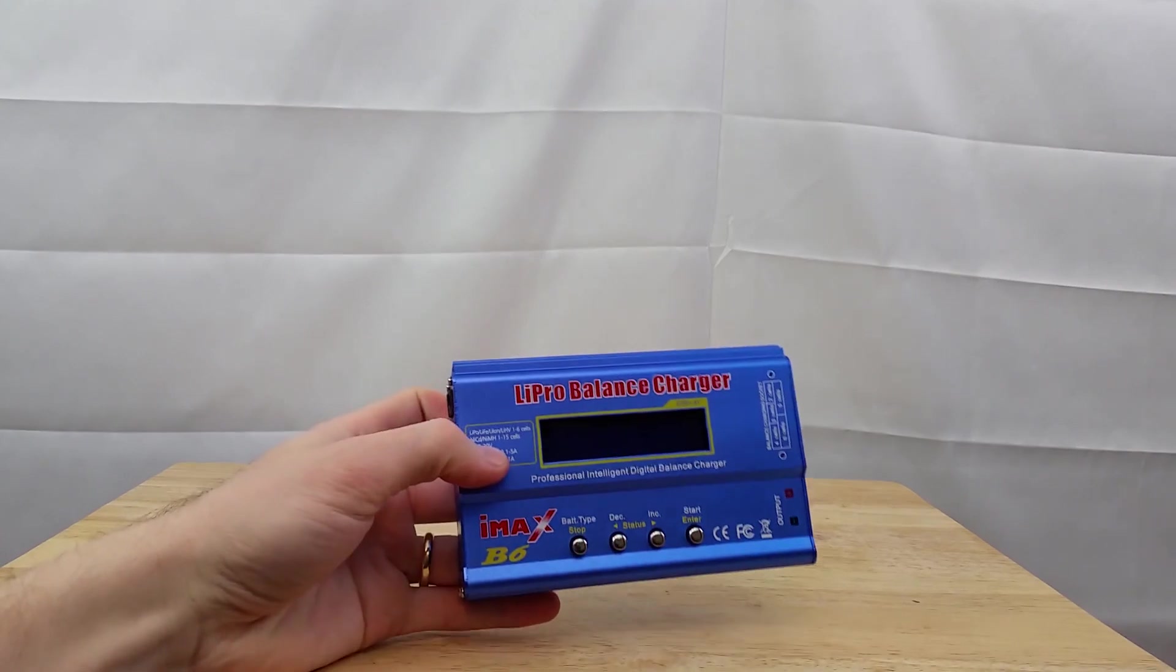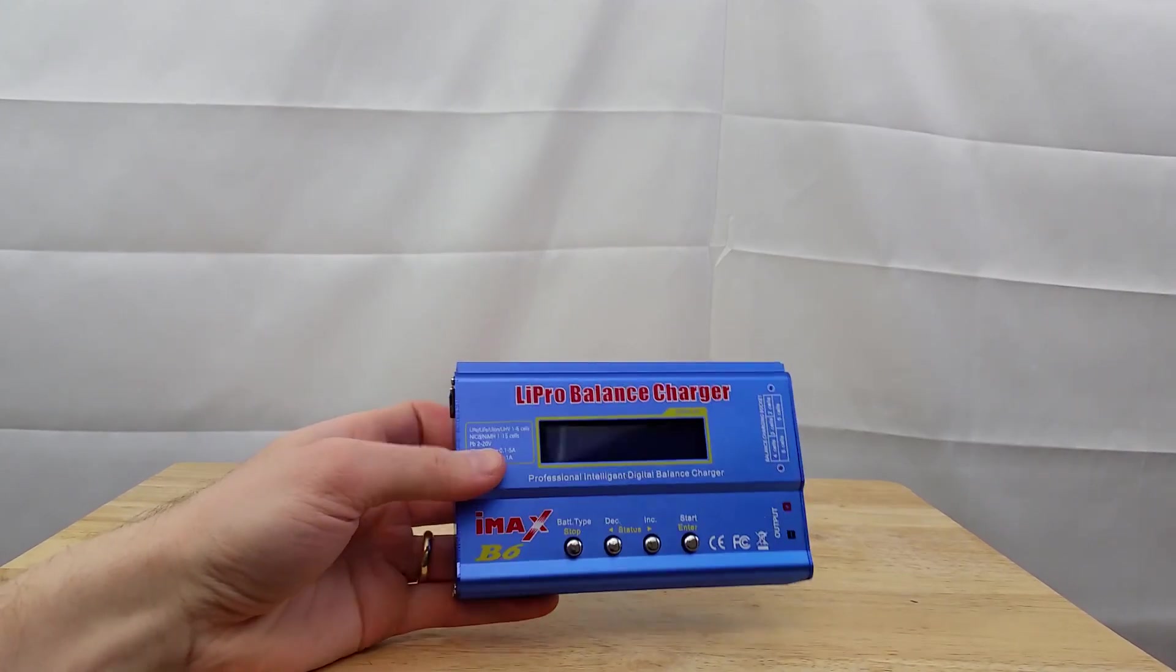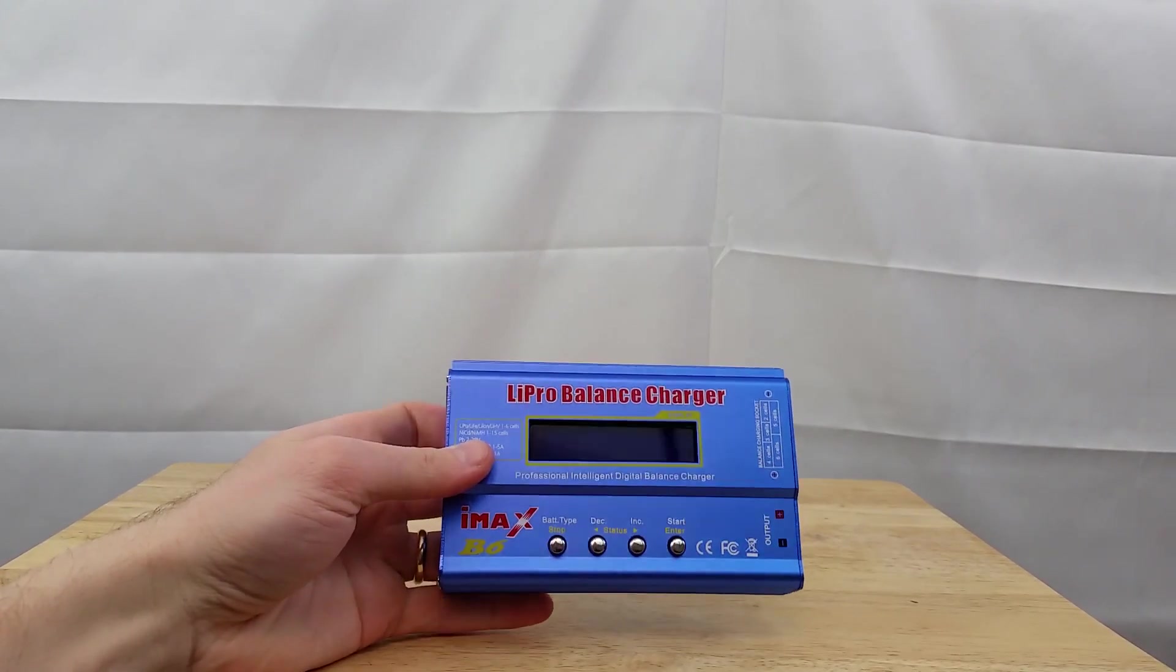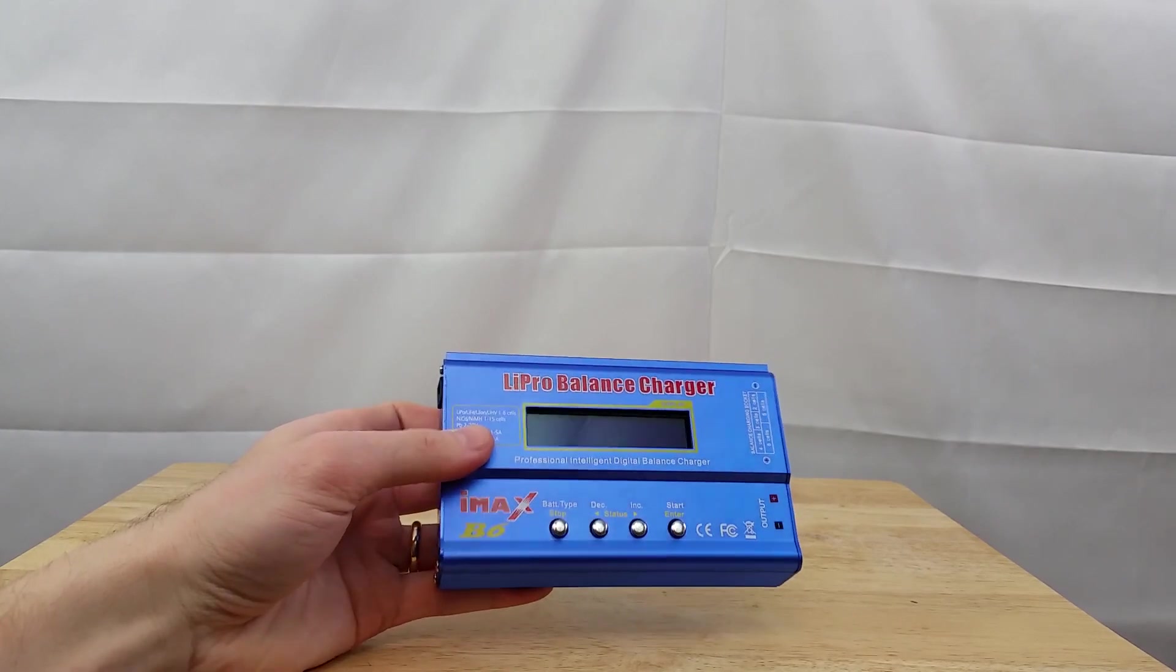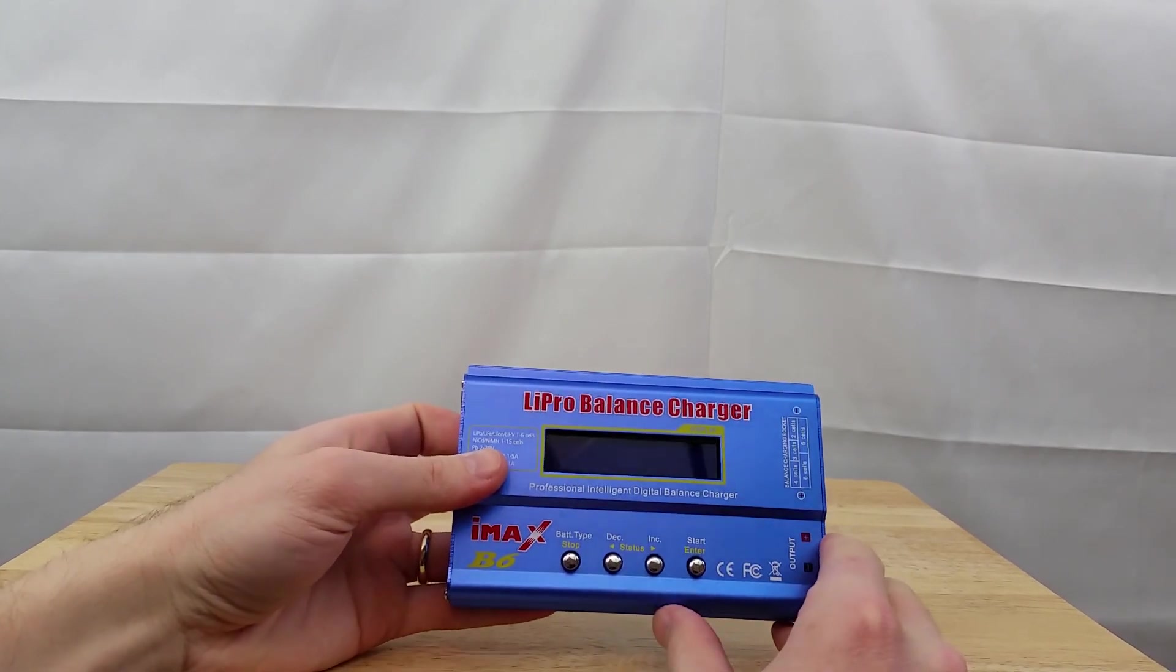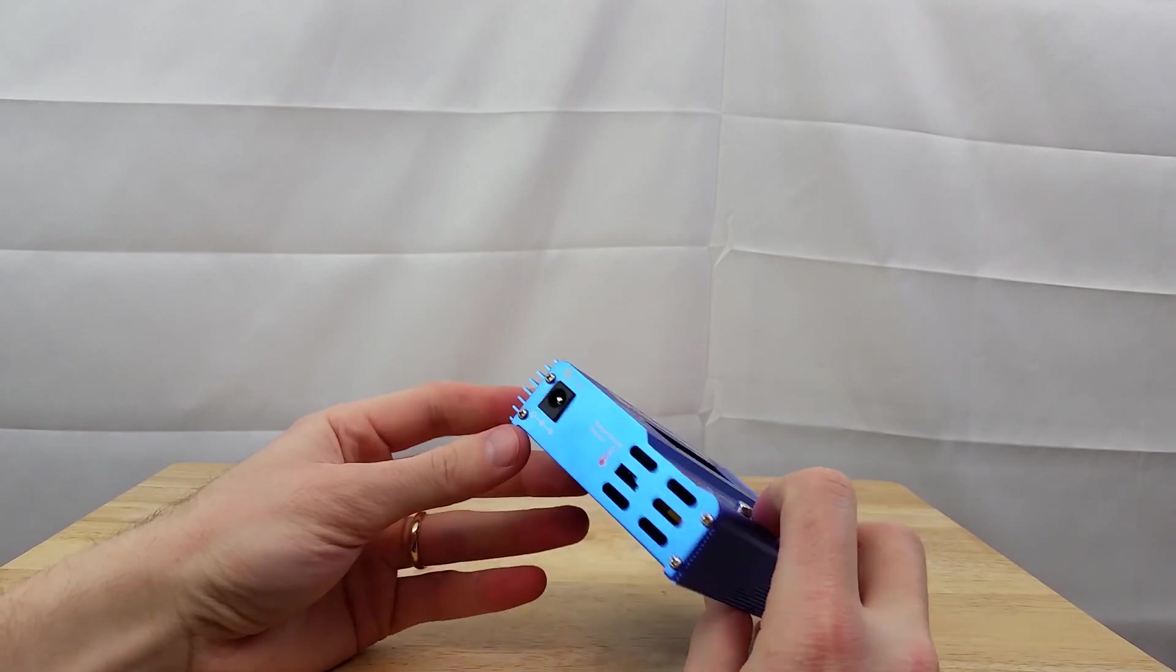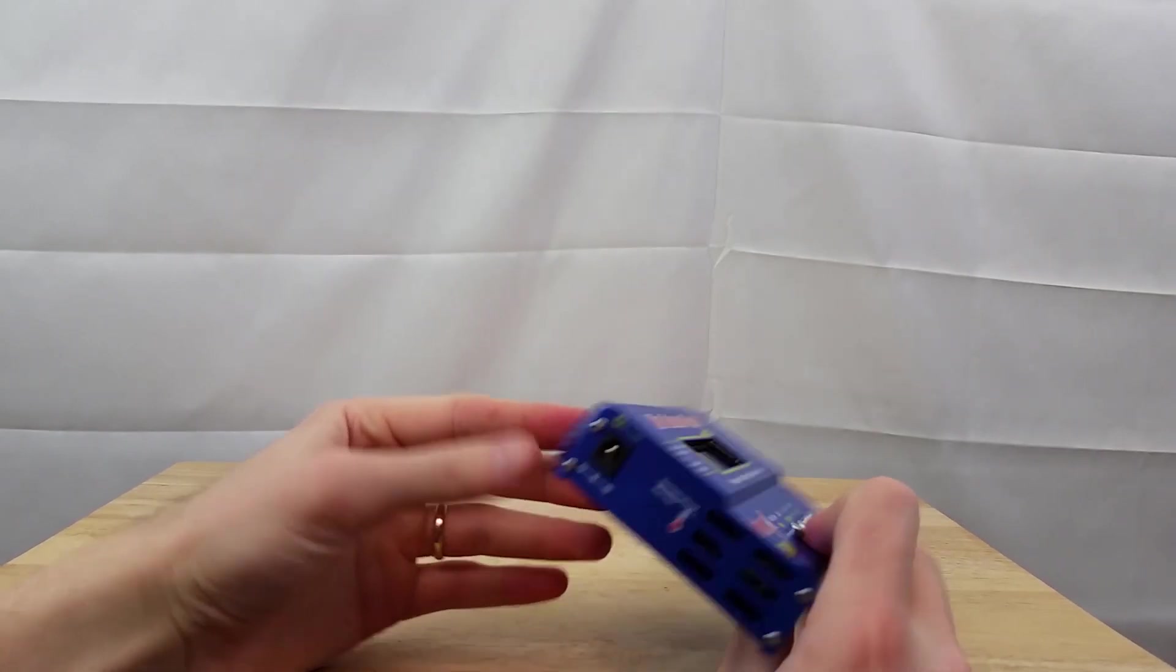This is the IMAX B6, and this was about $17 on eBay. This thing itself actually, for whatever reason, does not come with the AC adapter so you can plug it into your wall, so you have to get that separately.